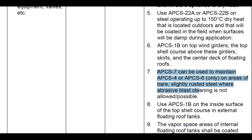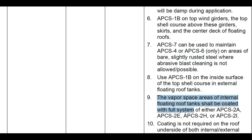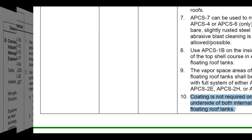Point 7: APCS7 can be used to maintain APCS4 or APCS6 on areas of bare or slightly rusted steel where abrasive blast cleaning is not allowed or possible. Point 8: Use APCS1B on the inside surface of top shell courses in external floating roof tanks. Point 9: The vapor space areas of internal floating roof tanks shall be coated with the full system of either APCS2A, APCS2E, APCS2H, or APCS2I. Point 10: Coating is not required on the roof underside of both internal and external floating roof tanks.